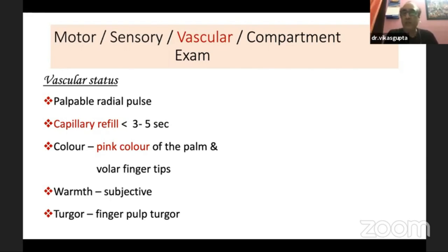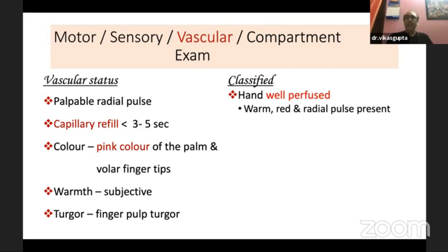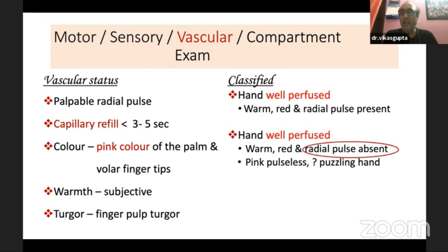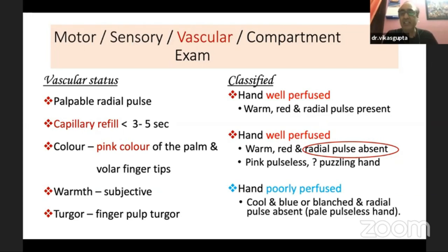Based on vascular status, classify the fracture into three types. First: the hand is well perfused — warm, red, radial pulse present. Second: the hand remains well perfused but the radial pulse is absent — this is the pink pulseless hand, which remains controversial. Third: the hand is poorly perfused — cool or cold, blue or blanched with radial pulse absent, also called the pale pulseless hand.